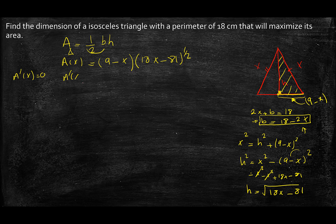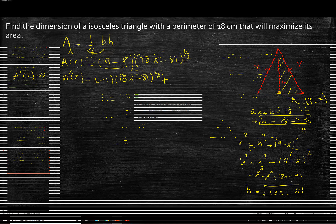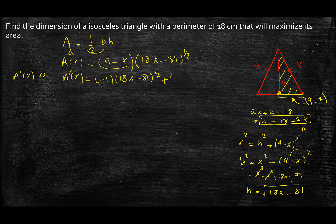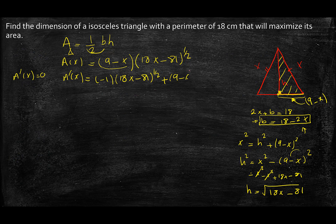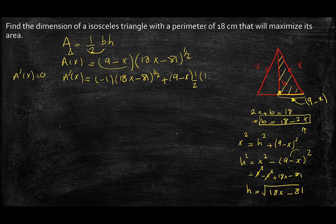Okay, looks like we are all set. All we need to do is to take the derivative and put it equal to 0. So the derivative is going to be the derivative of the first one, which is minus 1, times the second one, plus the derivative of the second one times the first one. So the first one remains, and the derivative of the second one would be half of 18x minus 81 to the minus a half, times the derivative of what's inside, which is 18.